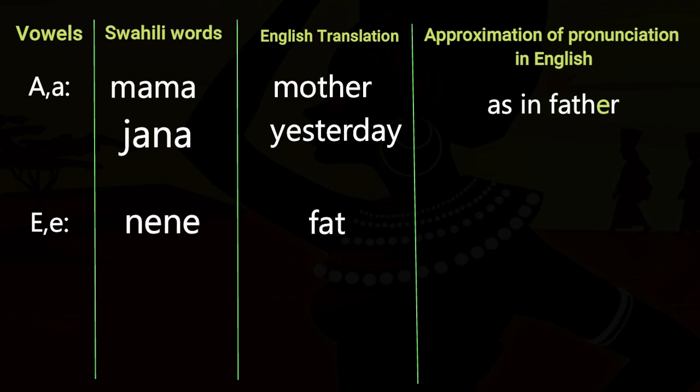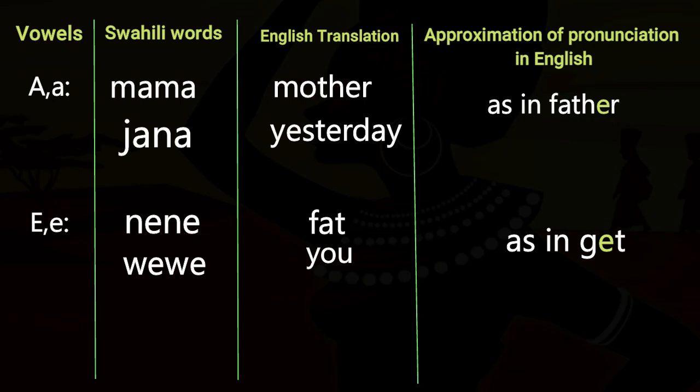The second vowel is E, in words like 'nene' meaning Fat, and 'wewe' meaning You — pronounced as in 'Get'.